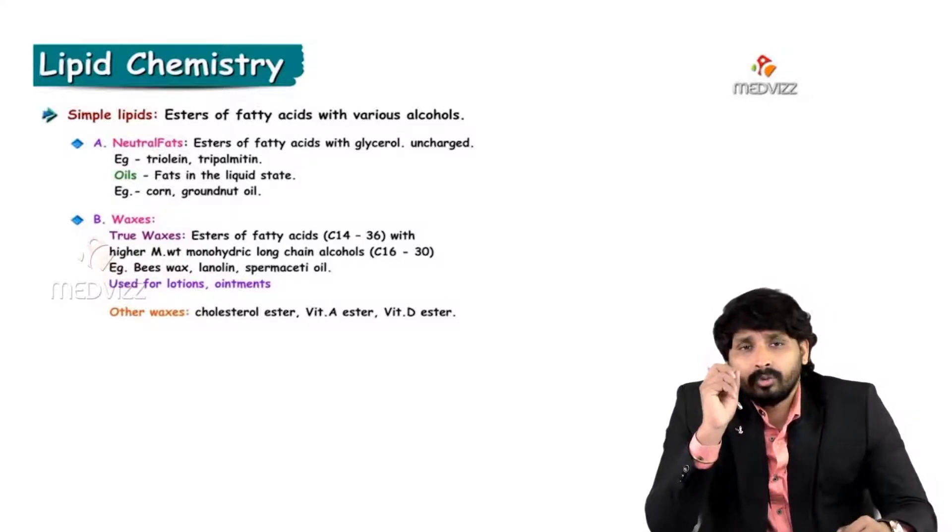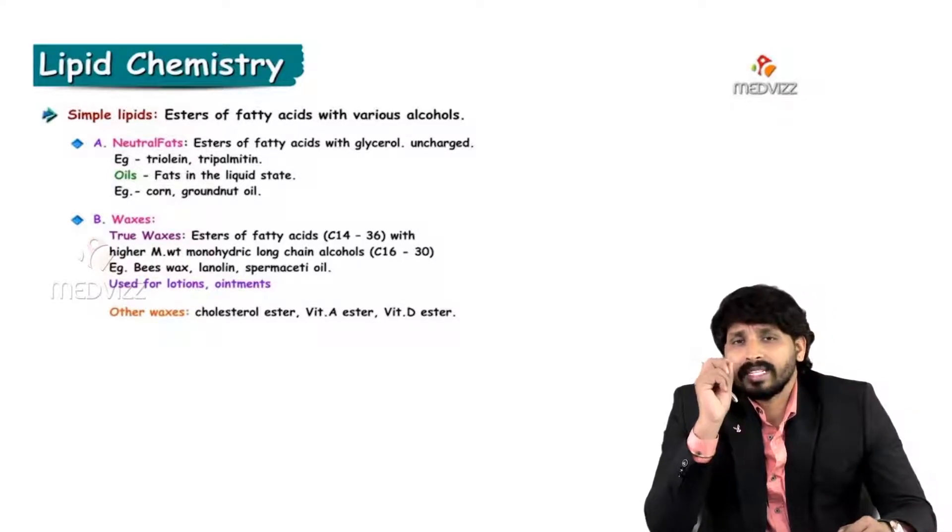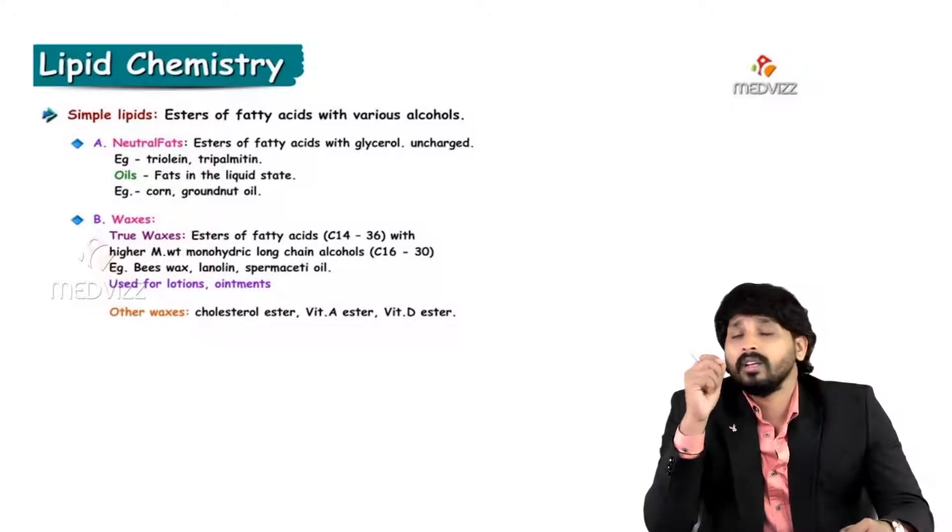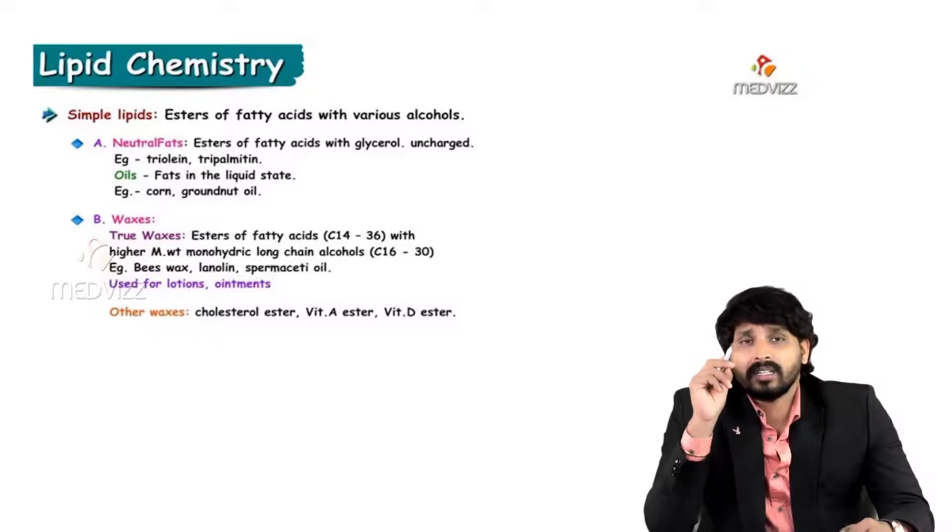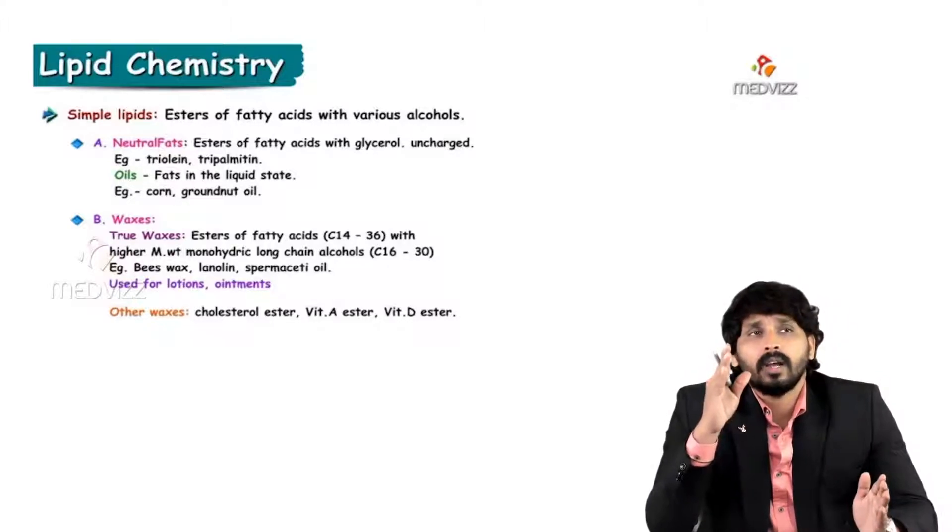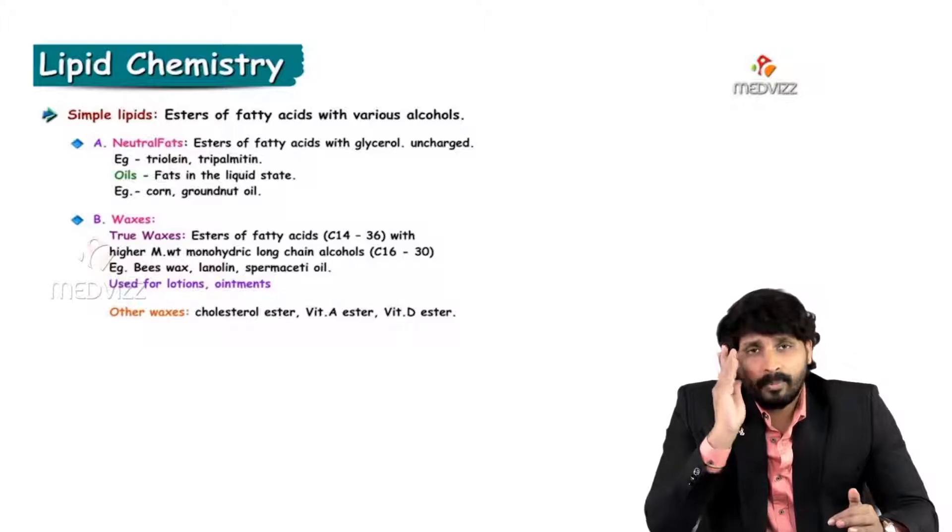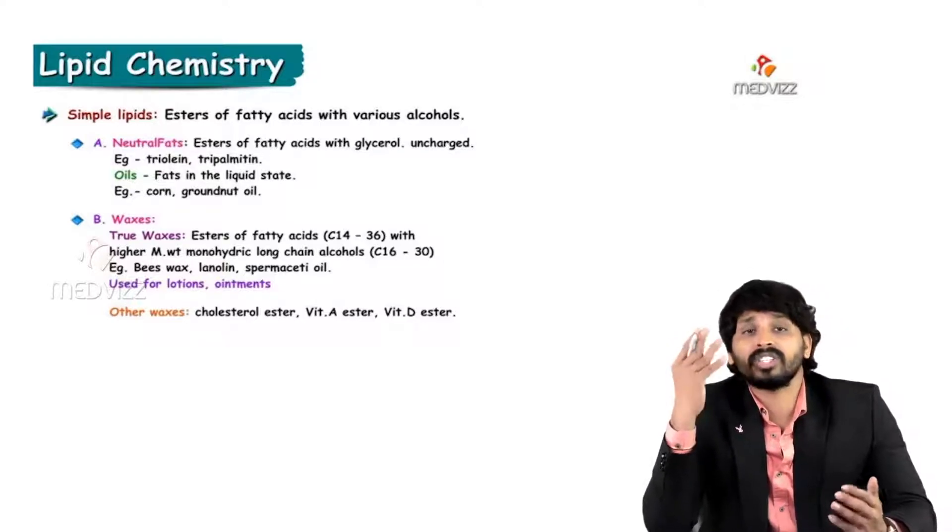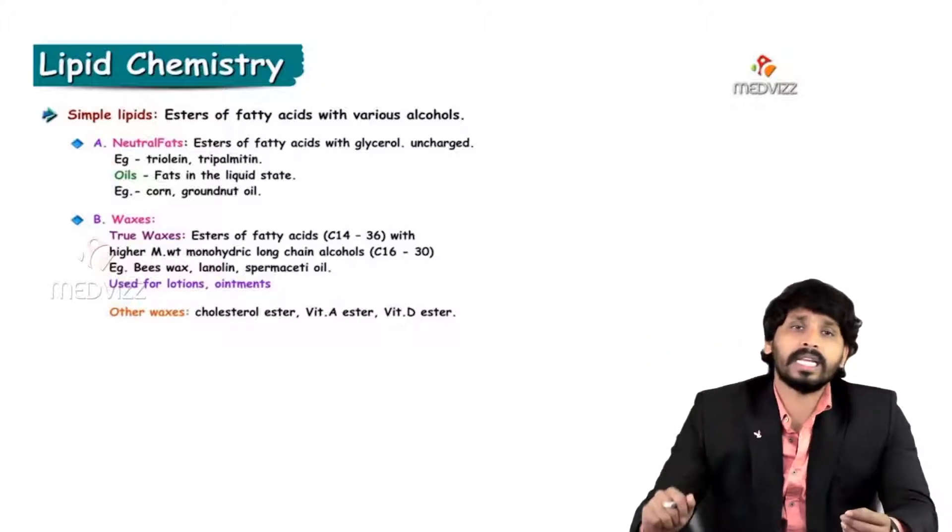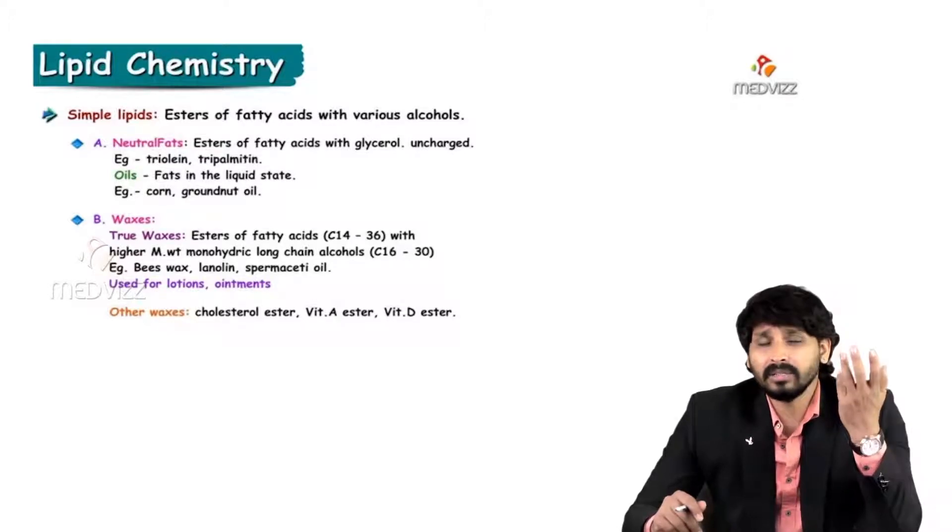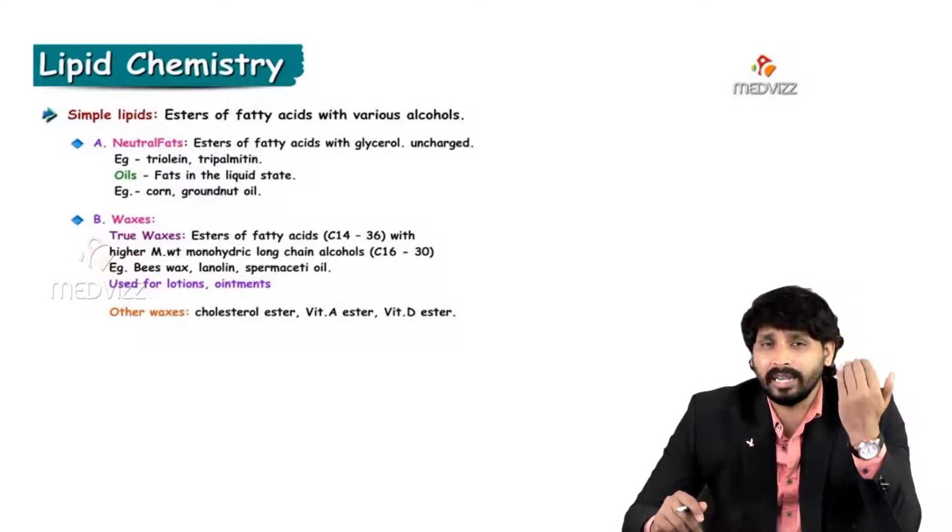Coming to the second category: waxes. True waxes, that means they are also esters of fatty acids, but with higher molecular weight alcohols. That is the difference between fats and oils and waxes. Fats and oils are made up of fatty acids and glycerol. But in waxes, they are made up of fatty acids plus high molecular weight alcohols, long chain alcohols. Example, I can give you beeswax and then spermaceti oil.